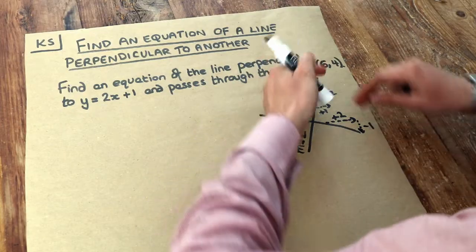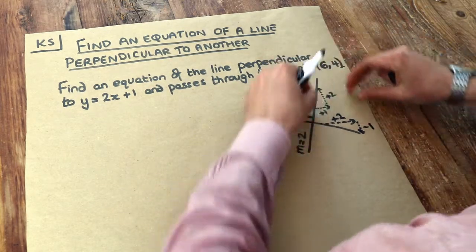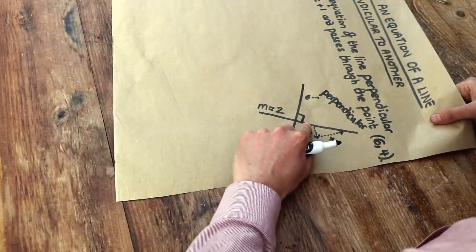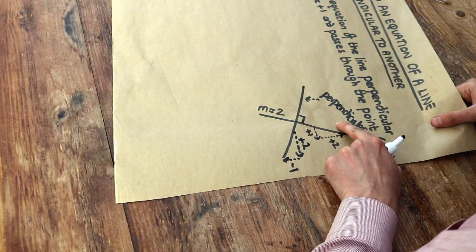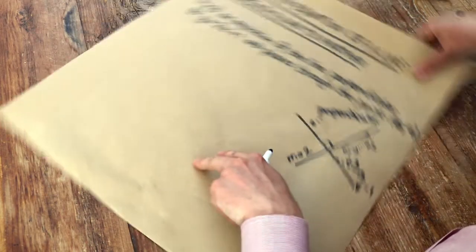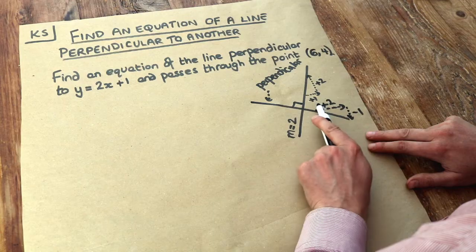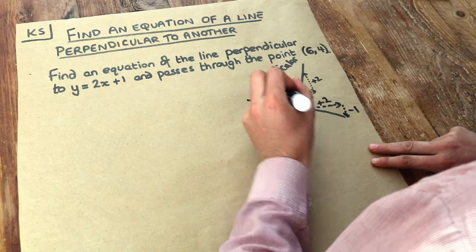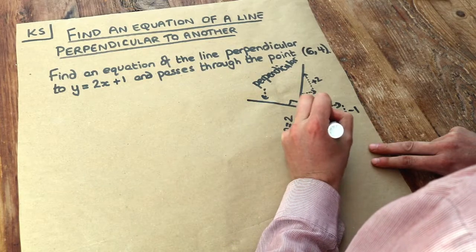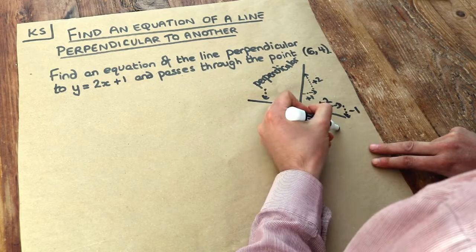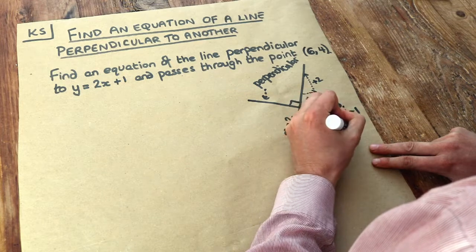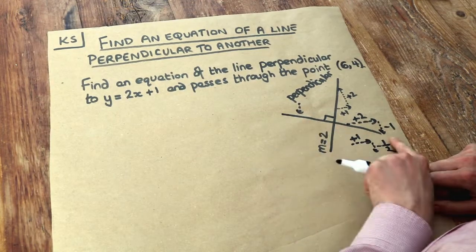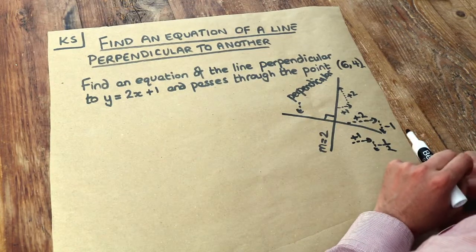Now by a sort of rotational symmetry type argument, can you see that if x increases by 2, the y value is going to go down by 1? And that's because if you rotate this triangle around you get this. You can see x values increasing by 2, the y value is going down by 1. Now if each time x increases by 2 the y decreases by 1, that means that each time x increases by 1 the y value is going to go down by half. So the gradient of this perpendicular line is going to be negative half.